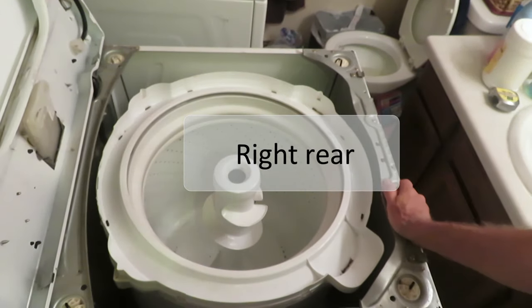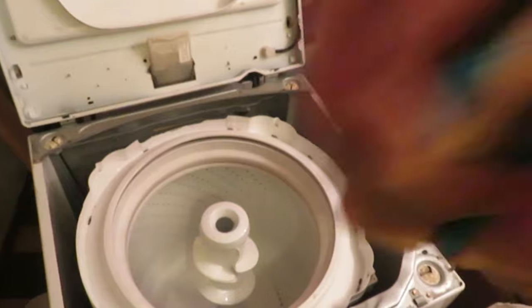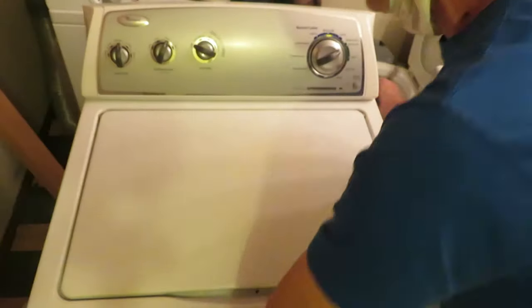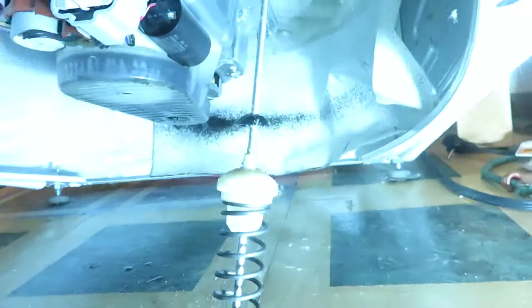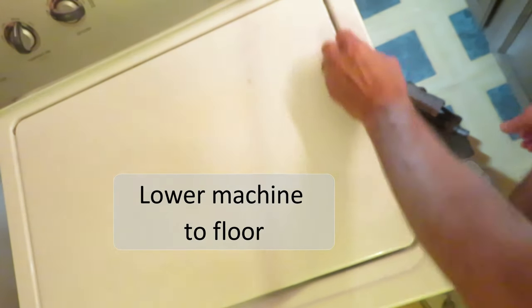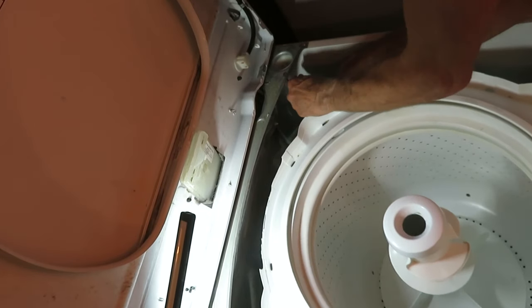To do this last one we're gonna rotate the machine. Let's pull this one. Working in the close quarters of this laundry room means that we have to kind of horse this machine around in order to do this right rear suspension rod. And here's the final one. Another slippery one. There it goes.